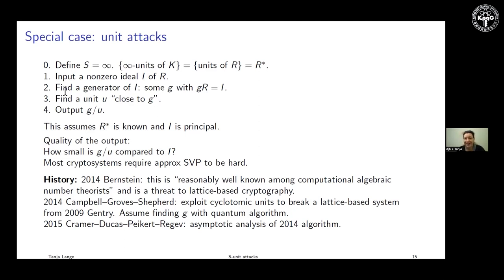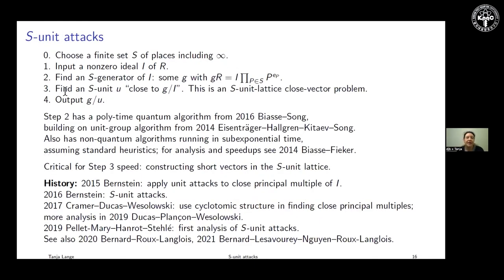This goes back to 2014 — there was a blog post saying this might be a threat to lattice-based cryptography. The same year, a group at GCHQ showed this as an attack on a lattice system essentially equivalent to Gentry's 2009 system. They showed that finding the generator g in step two uses a quantum algorithm. The next year, Cramer et al. analyzed the asymptotic complexity. Campbell, Groves, and Shepherd already had the algorithm: for nice units, something very efficient even with LLL — no fancy lattice algorithm needed — yielding really short vectors.